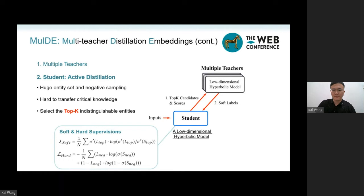measuring the KL divergence between the student scores and the soft labels. The hard loss is a binary cross entropy loss, which is usually utilized to train a single KGE model with negative sampling.